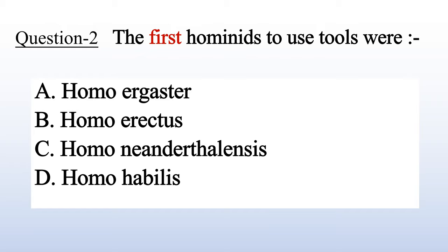Question 6: The first hominids to use tools — A. Homo ergaster, B. Homo erectus, C. Homo neanderthalensis, D. Homo habilis. Answer is D: Homo habilis.